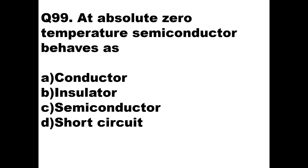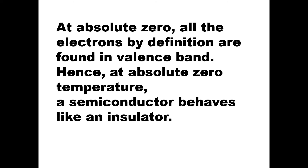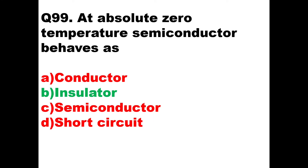Then we will go to the next question. At absolute zero temperature, a semiconductor behaves as what? When the temperature is low, all the electrons in a semiconductor will be in the valence band — they will not be in the conduction band — and you will not get any free electrons to make current flow. That means at absolute zero temperature, a semiconductor behaves as an insulator. Option B will be the right answer. At absolute zero, all the electrons are found in the valence band, and hence a semiconductor behaves like an insulator.